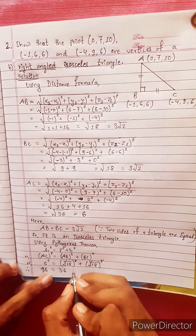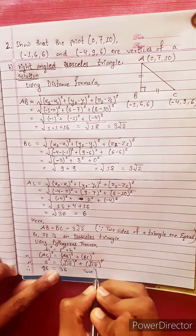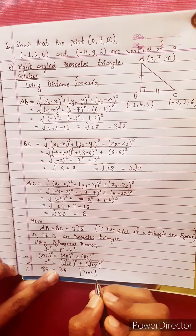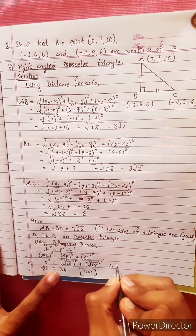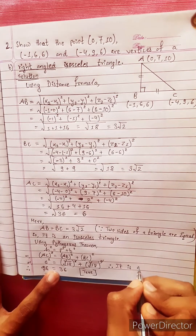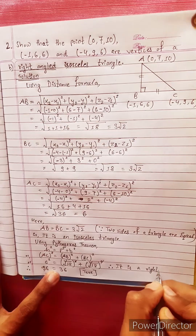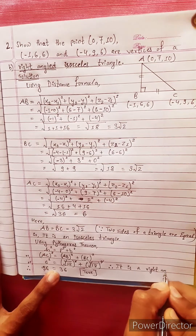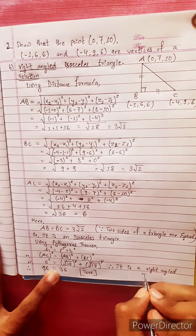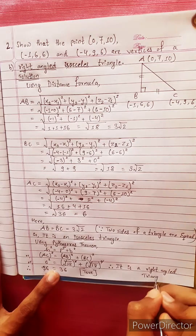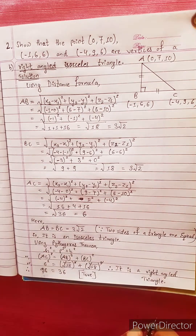Therefore the triangle is a right angle triangle. It is an isosceles right-angle triangle, which is what we set out to prove.